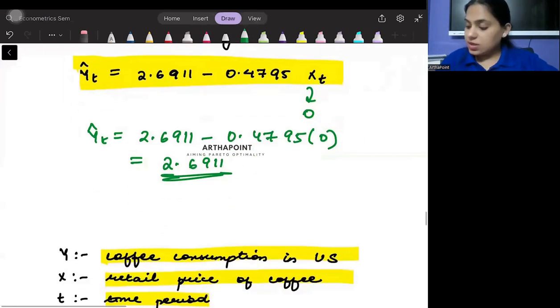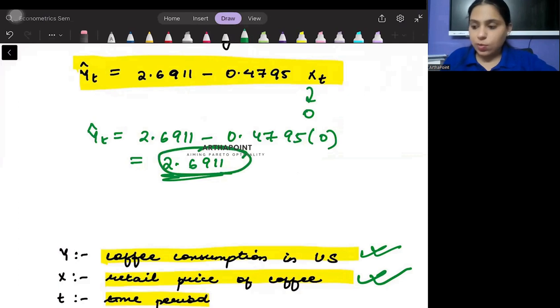This represents the coffee consumption when the price of the good is 0, which is 2.6911. Then how Y changes as X changes is minus 0.4795, and this represents the slope.